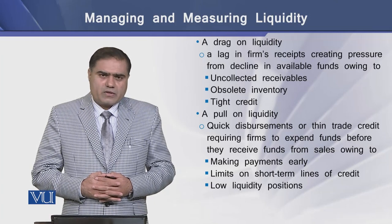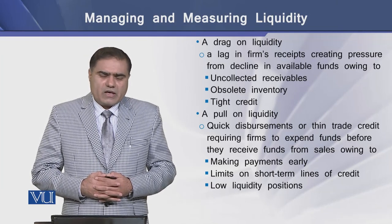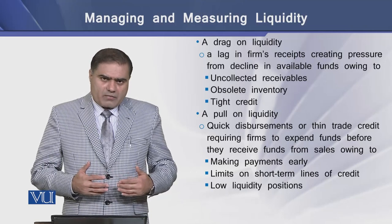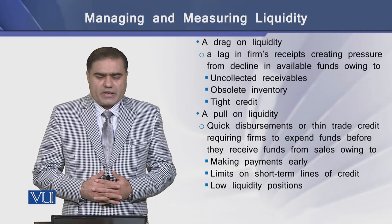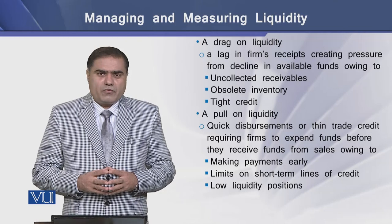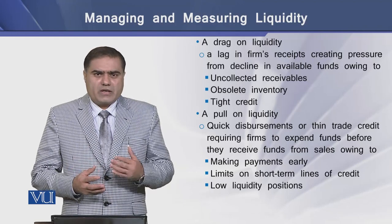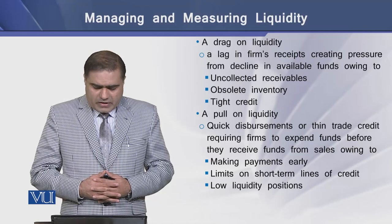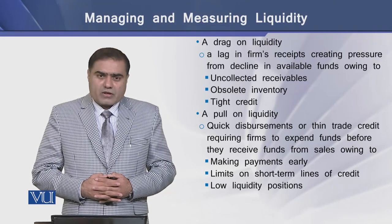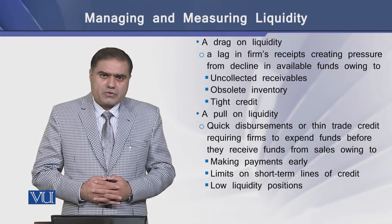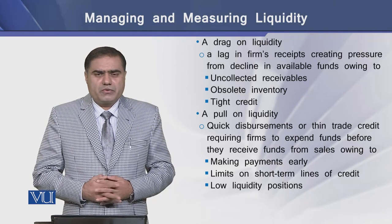The three causes of drag on liquidity are: first, uncollectible receivables; second, obsolete inventory; and third, tight credit available to the firm. By pull on liquidity we mean quick payment or thin trade credit requiring a firm to expend funds before it receives funds from sales. This pull comes from firms being required to make payment earlier, limits on short-term credit lines set by the bank due to certain inefficiencies, and a low liquidity position of the firm.